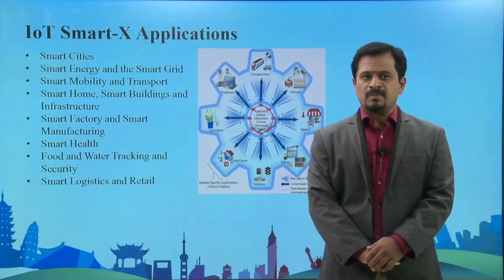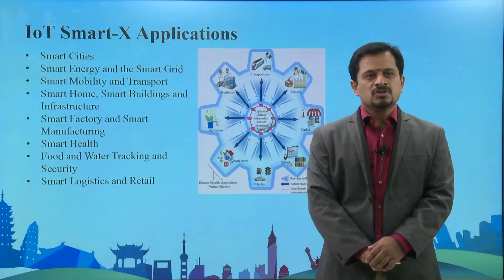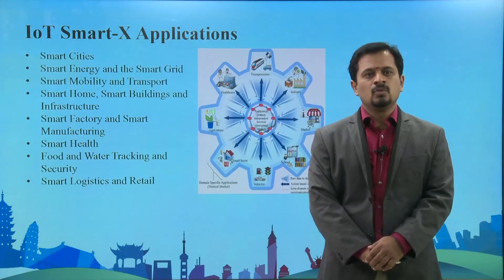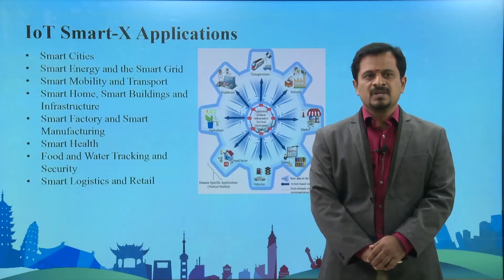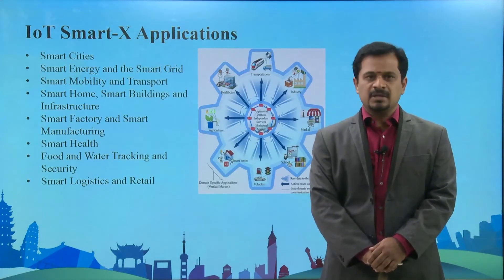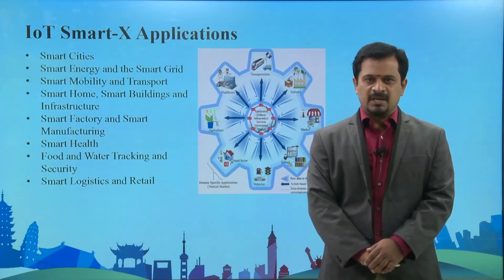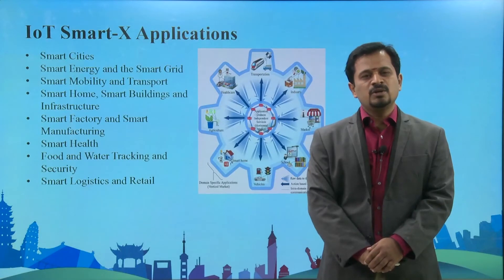Smart home, smart buildings, smart infrastructure, smart factory, smart manufacturing, smart health, food and water tracking and security, smart logistics and retail — these are all IoT Smart X applications. Next we are going to discuss few of the applications like smart city, smart environment, and smart health.